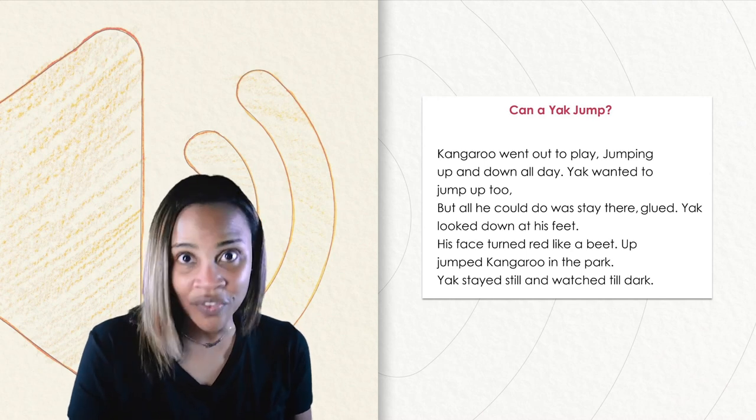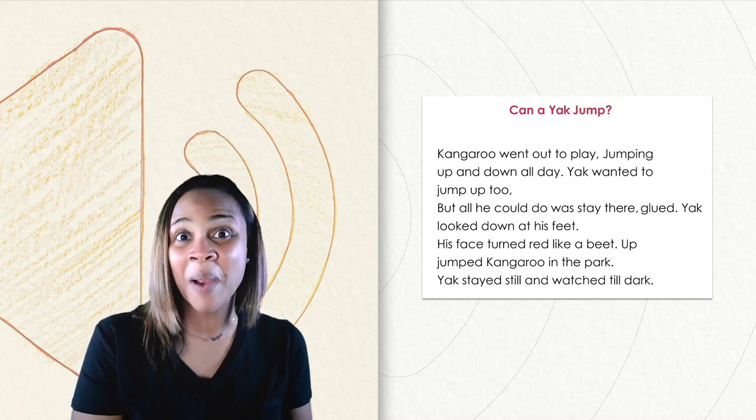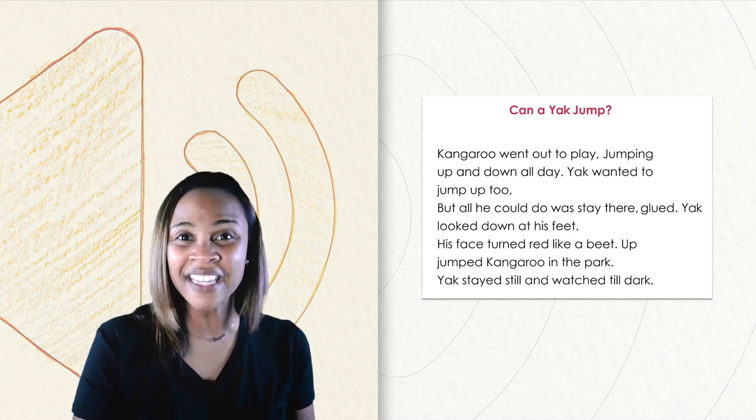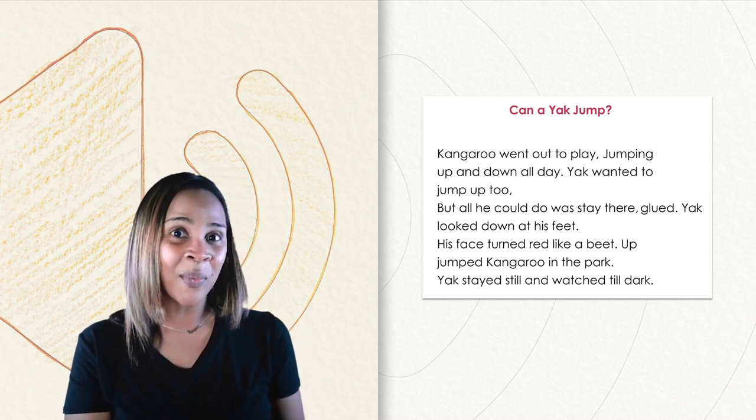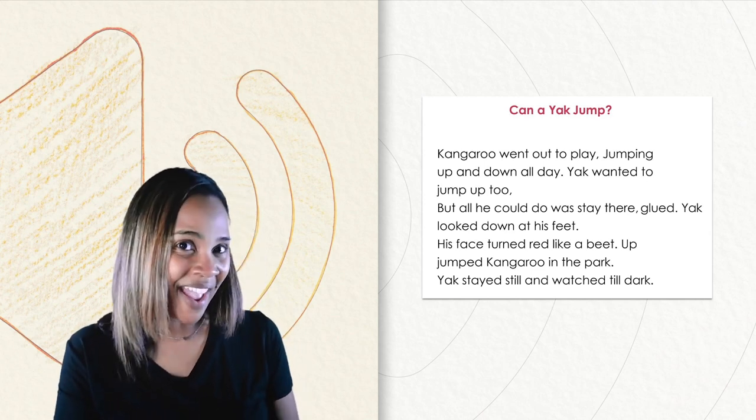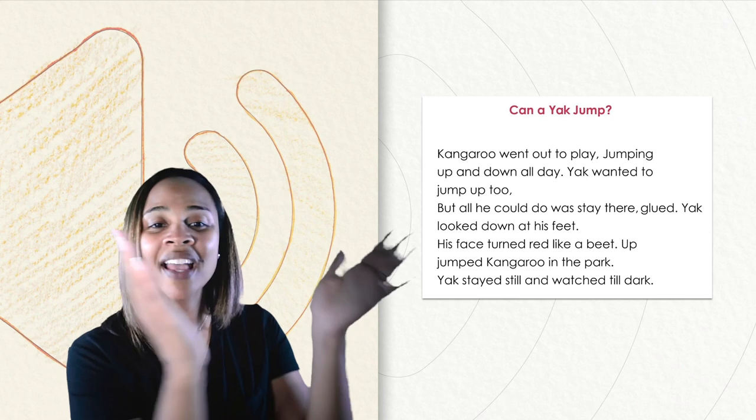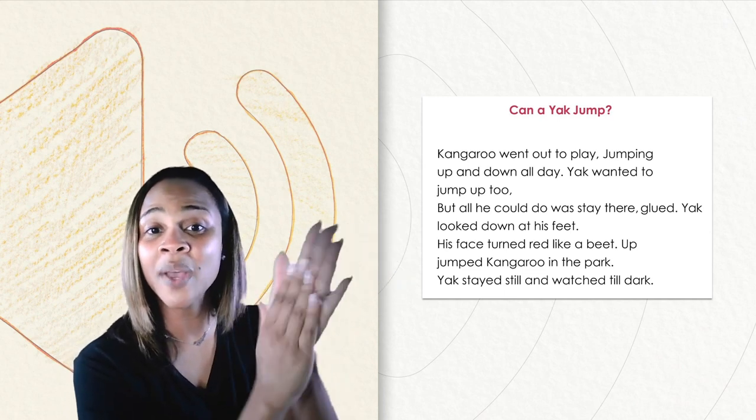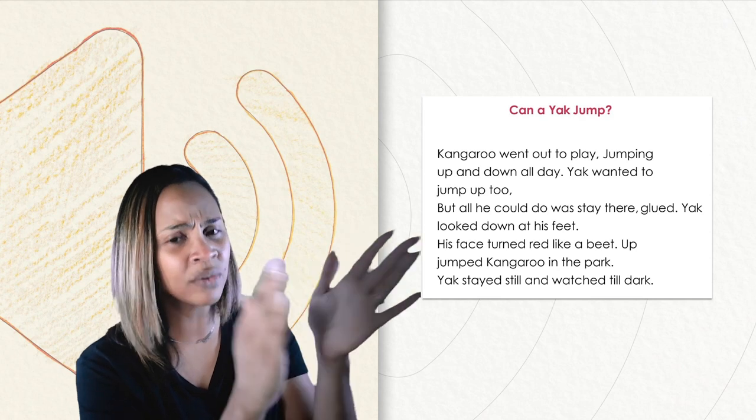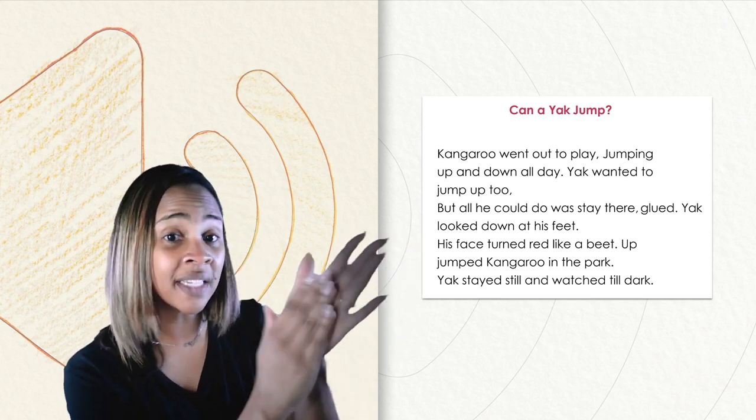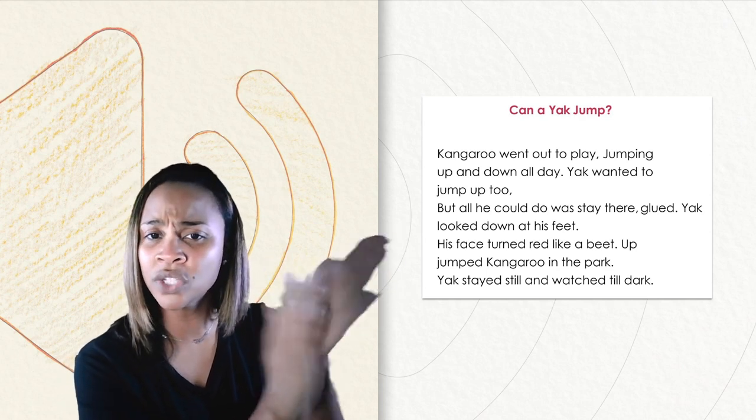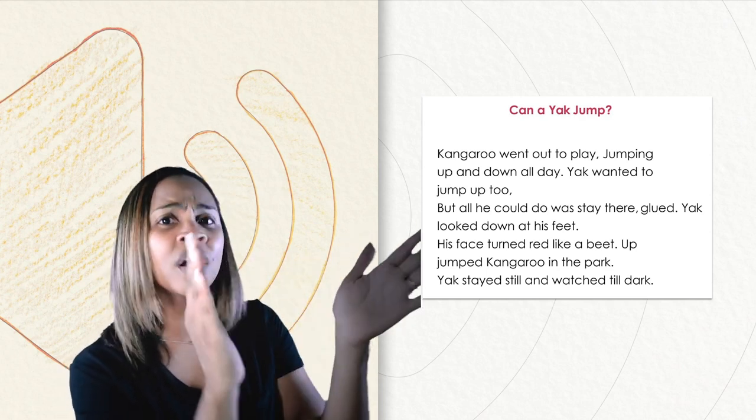There's a wonderful rhythm and beat in our poem, Can a Yak Jump? I want you to listen and follow along as I clap out the words and we feel the beat as we listen. Ready? Kangaroo went out to play, jumping up and down all day. Yak wanted to jump up too, but all he could do was stay there glued.